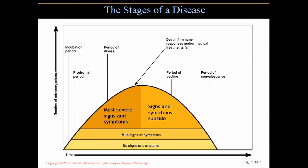If immune responses and medical treatments fail, death can occur at the peak. The period of decline follows, where you're getting better and signs and symptoms are subsiding. Then comes the period of convalescence at the end — you're thinking 'I can go to work tomorrow.' The graph rises as you feel worse, peaks at the worst point, then descends as you recover. These are just the stages of a disease.